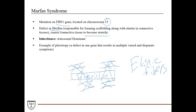Elastic fibers have elasticity — they stretch and then immediately reform back to their original shape. This is critical in structures like the aorta, which is under enormous pressure during systole, expands, and then reforms. In Marfan syndrome, the fibers just become stretchy with no structural force to reform. Inheritance is autosomal dominant. This is an example of pleiotropy, where a defect in one gene results in multiple varied and disparate symptoms across many different organ systems, because elastic fibers are a critical component of multiple organs.